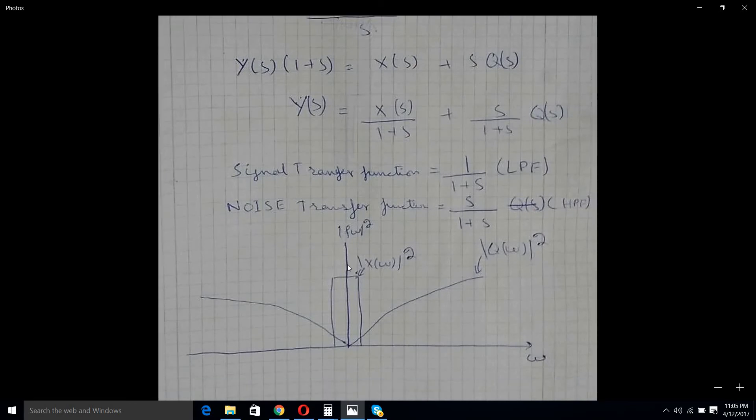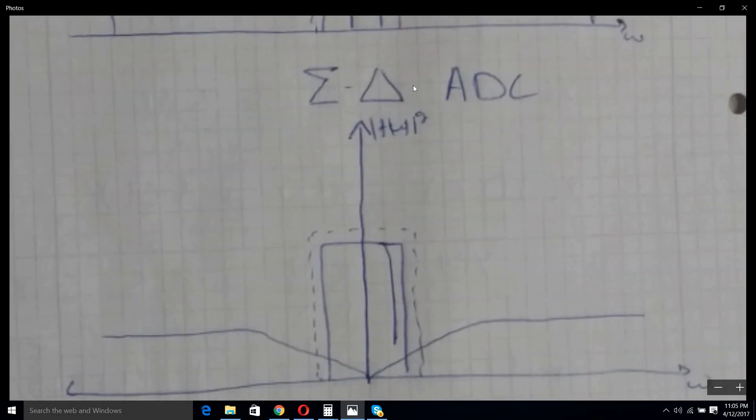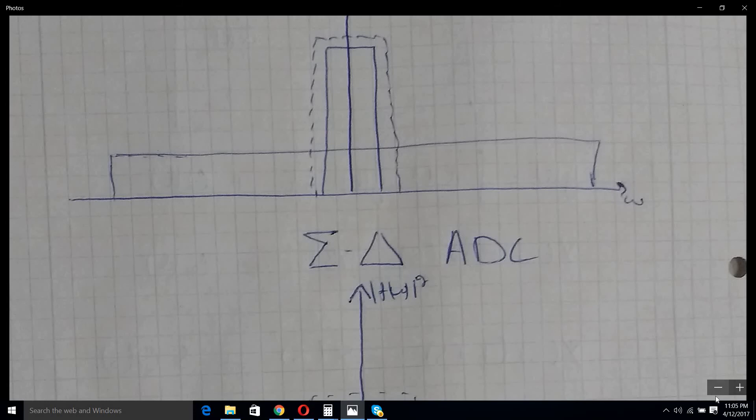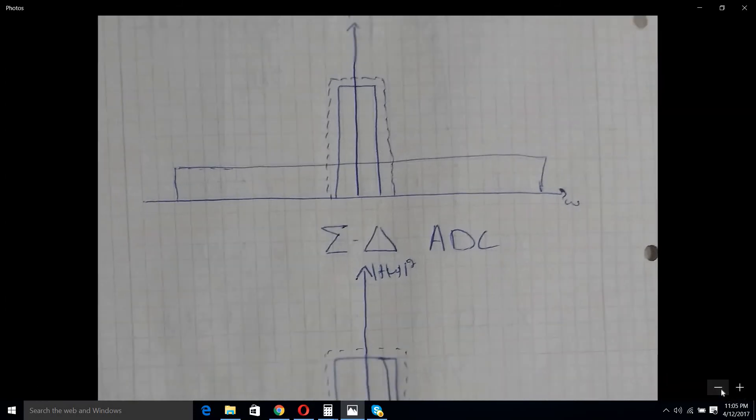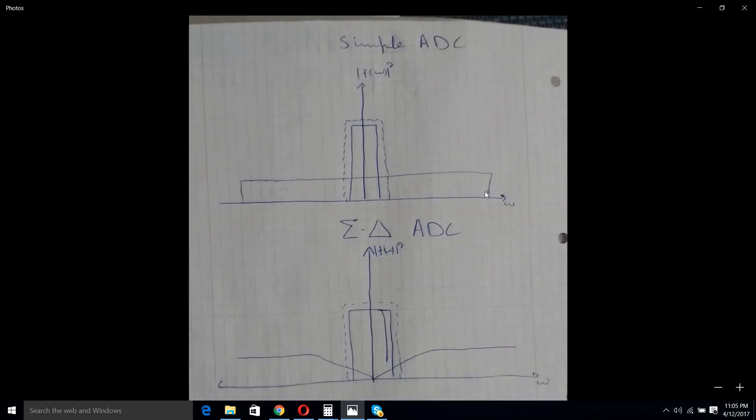But that's not the end of it. There are other benefits of Sigma Delta converter and that comes with oversampling. Over here, in a simple ADC, doubling the sampling rate gets us an increase in the signal to quantization noise ratio of 3 dB.